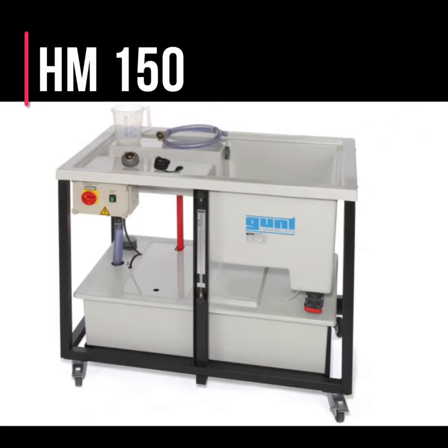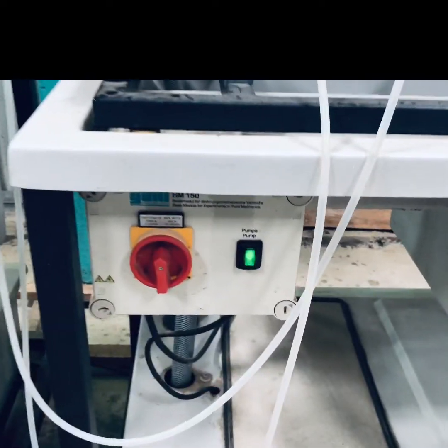This device is called SM 150 made by Gunt Germany. This base module provides the basic equipment for individual experiments: the supply of water in the closed circuit, the determination of volumetric flow rate, and the positioning of the experimental unit on a working surface. Now the pump is on and the water started flowing from the inlet to the outlet.